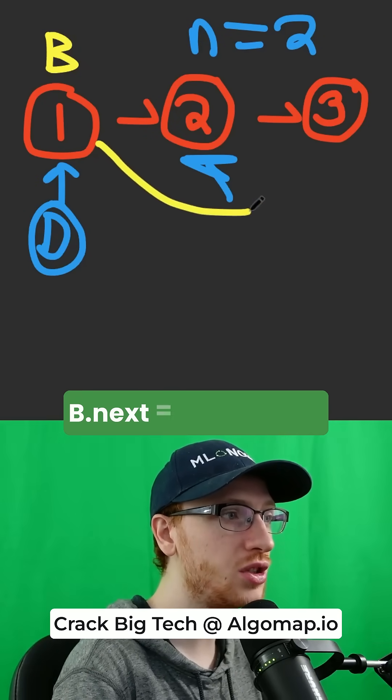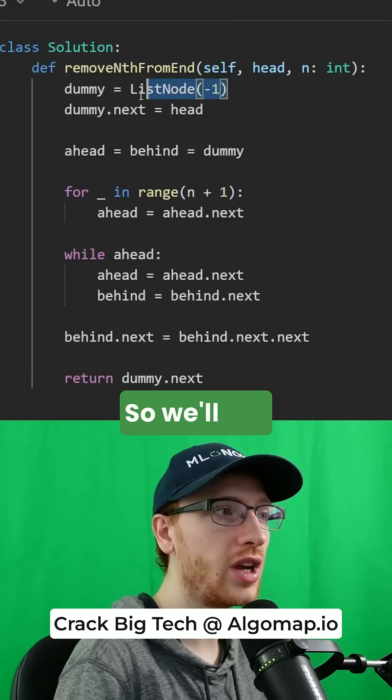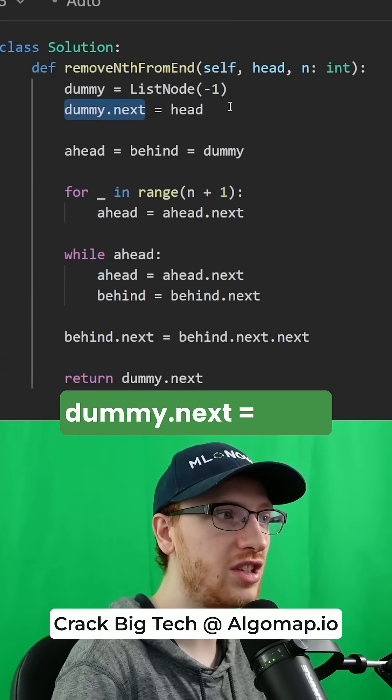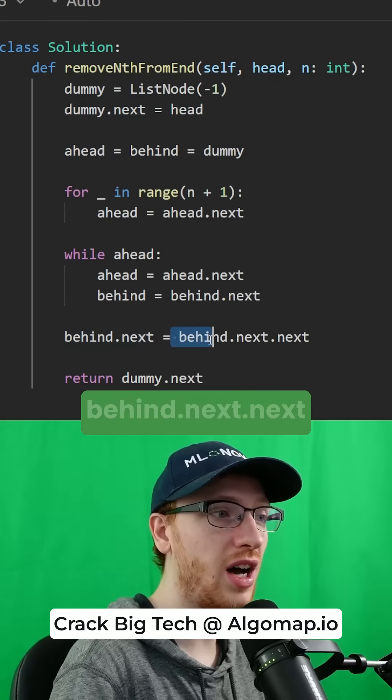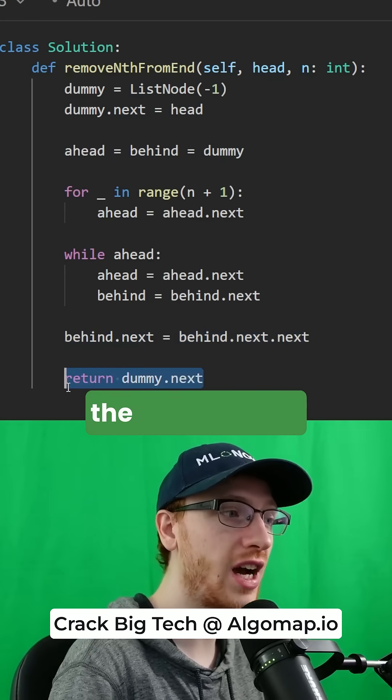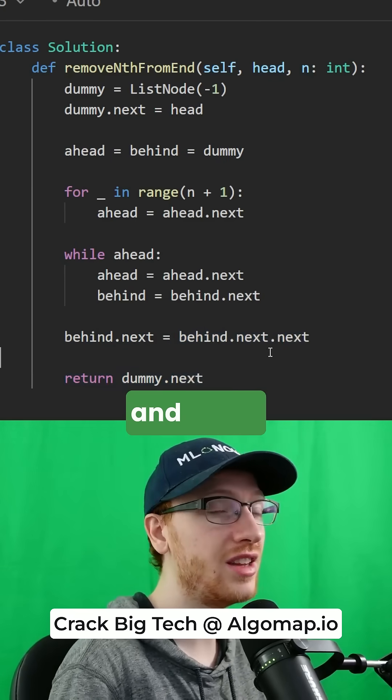We can just set b.next equal to b.next.next. So we'll get our dummy node, set our dummy node's next equal to the head, and set both ahead and behind equal to the dummy. Behind.next is equal to behind.next.next. We return the actual head, which is dummy.next, and that's our algorithm.